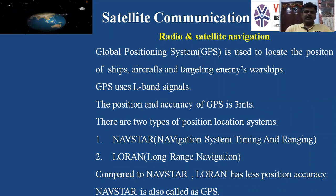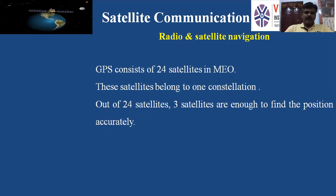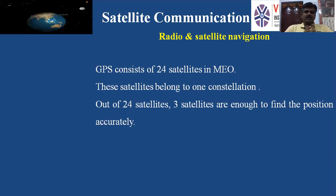GPS was introduced in the 1980s and we are still using it today. GPS consists of 24 satellites in Medium Earth Orbit (MEO). When you switch on GPS on your mobile, the GPS system in your phone connects to satellites in Medium Earth Orbit — a satellite constellation of 24 satellites. Out of those 24, only three satellites are needed to find your position accurately.